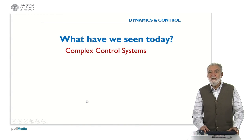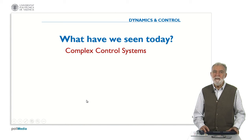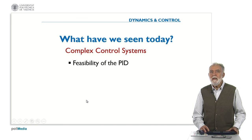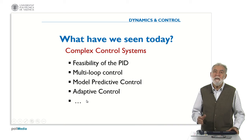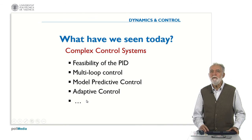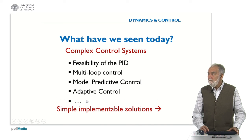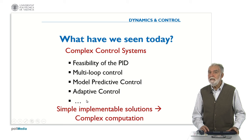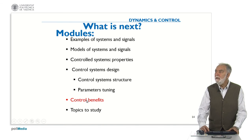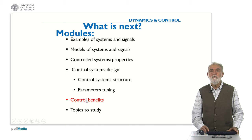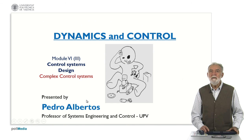To summarize, today we have seen more complex control systems beyond simple feed-forward and feedback: the improved PID, multi-loop cascade control, model predictive control, adaptive control, and virtual sensors to improve the information obtained from the plant. All these solutions are simple and implementable, but the computation can be complex and requires mathematics. The next module will cover control benefits — what we gain from applying control. Thank you for your attention.